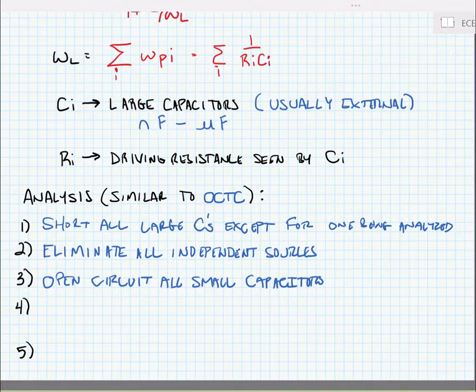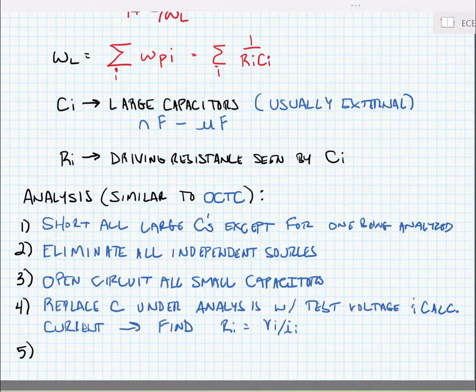Finally, we replace the capacitor being analyzed with a test voltage source and calculate the current and ultimately find the voltage over the current ratio. And now we're going to sum the inverse of all the time constants to find the pole frequency.